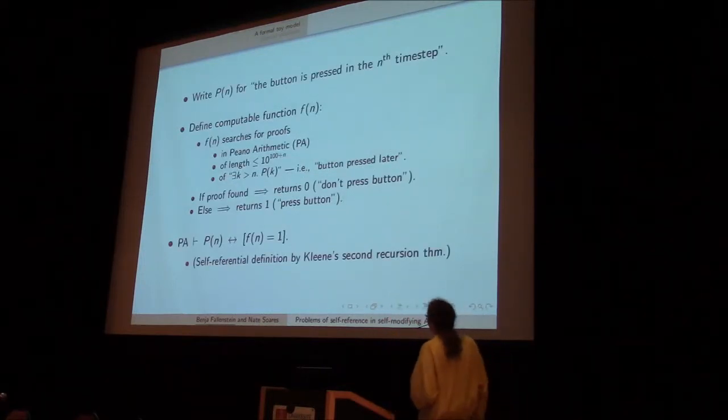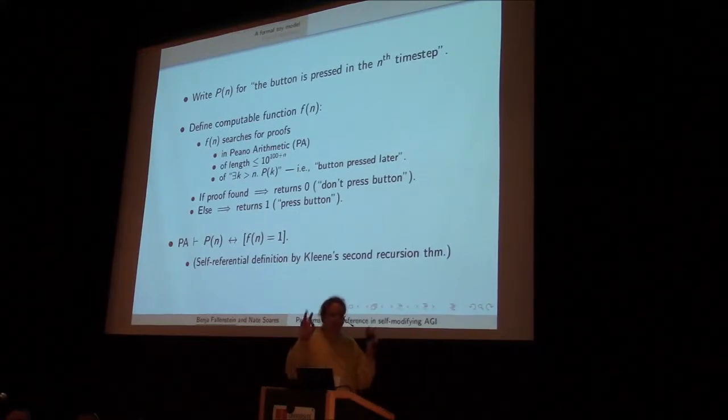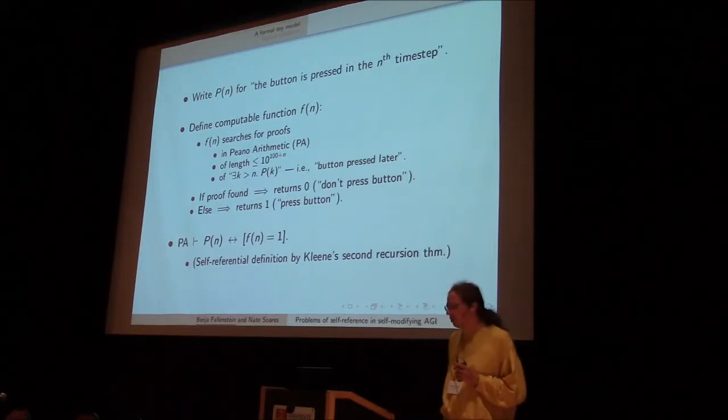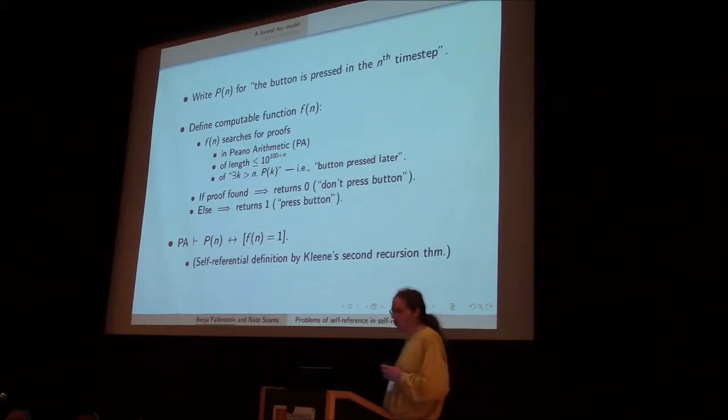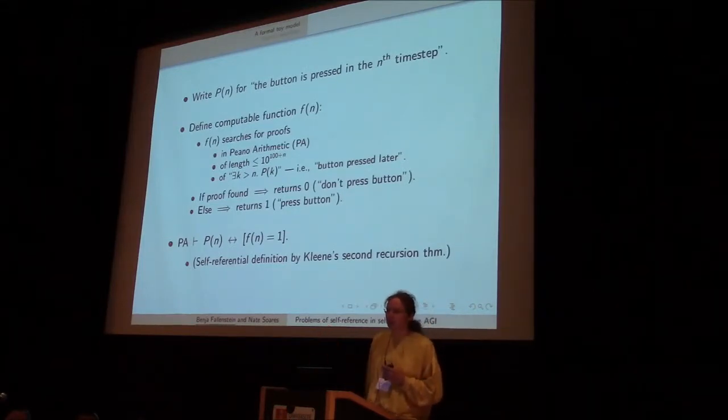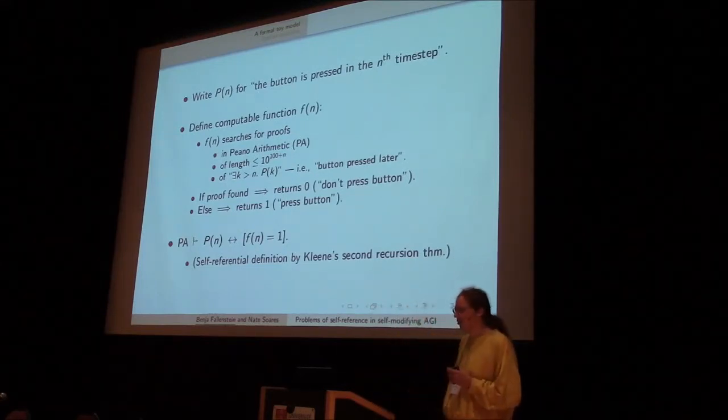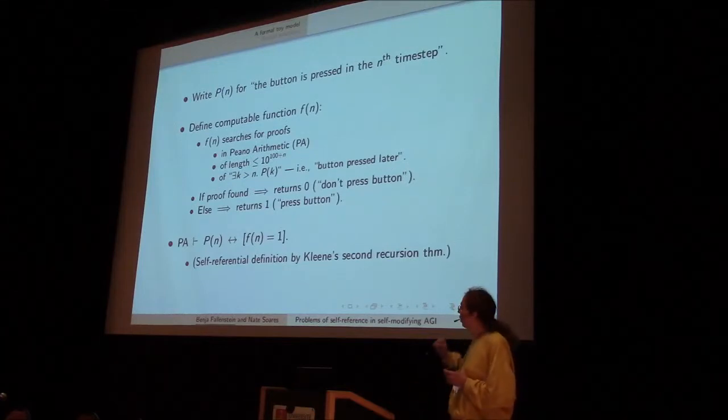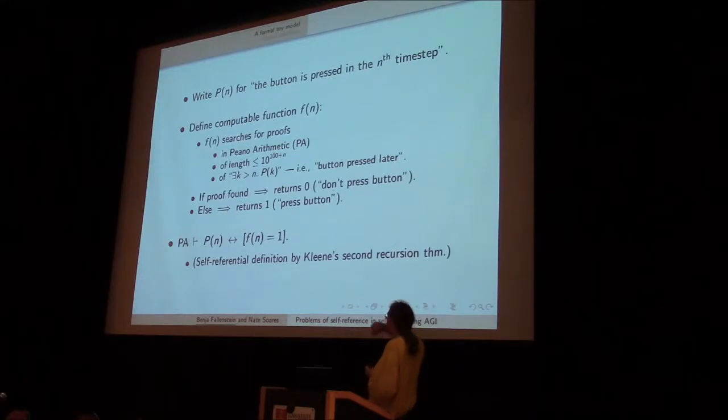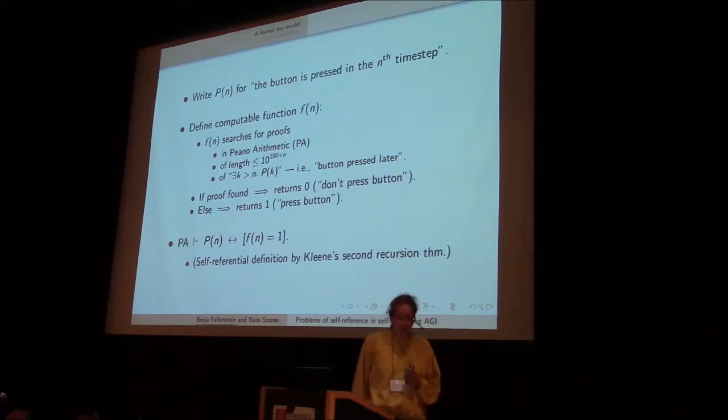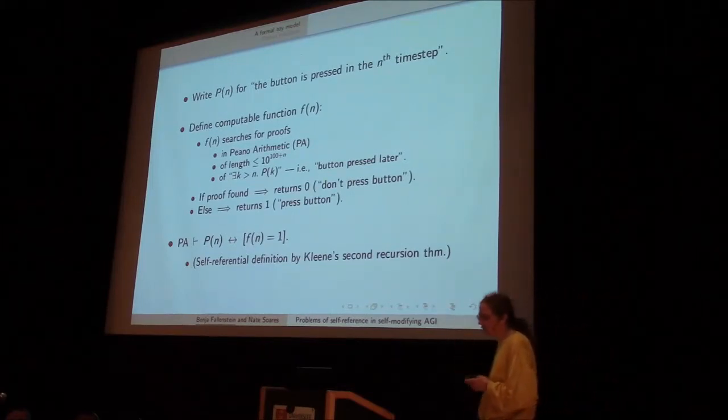But then the question is, what do these theorems teach us actually about the general problem, and can we apply those lessons and figure out if we have some general way of reasoning about self-modifications, how can we make sure that this isn't subject to any problems of this sort. So here's the formal setup. Let's write P(n) for if the button is pressed in the nth time step. And I'll make that formula at the end of this slide. And then we'll define a computable function f. f searches for proofs in Peano arithmetic, which are bounded by a certain length, that the button gets pressed later, after the nth time step.